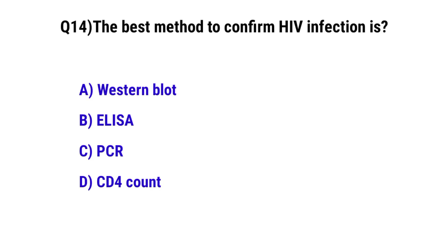Question No. 14: The best method to confirm HIV infection is — the correct option is C: PCR.